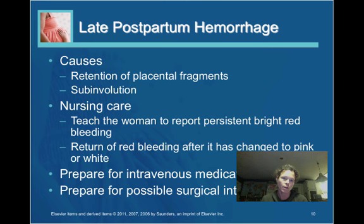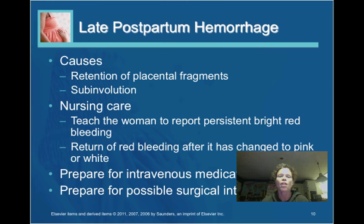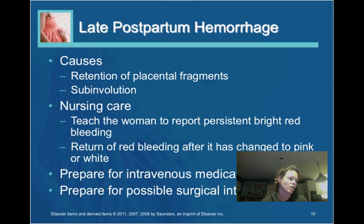Late postpartum hemorrhage usually occurs after 24 hours postpartum, and the most common causes are retention of placental fragments or sub-involution of the uterus. Nursing care involves teaching the woman to report persistent bright red bleeding or return of bleeding after it had already changed to pink or white. Anticipated nursing interventions include IV medications and preparation for possible surgical intervention — a D&C if there are retained placental fragments.